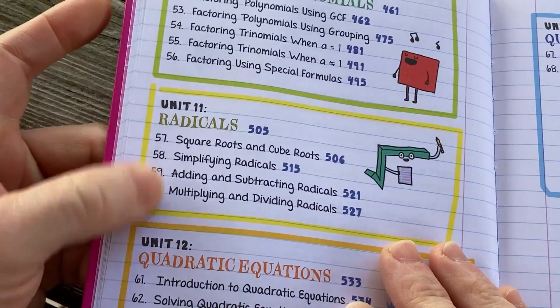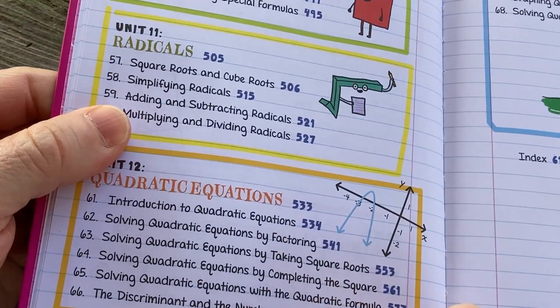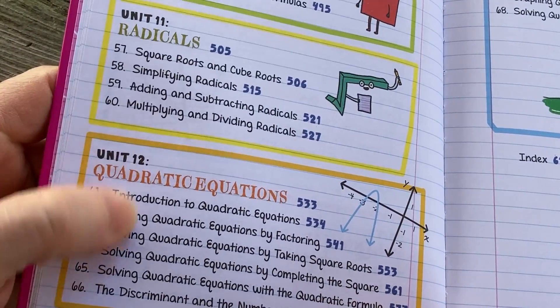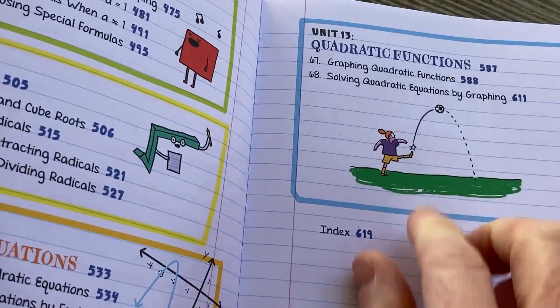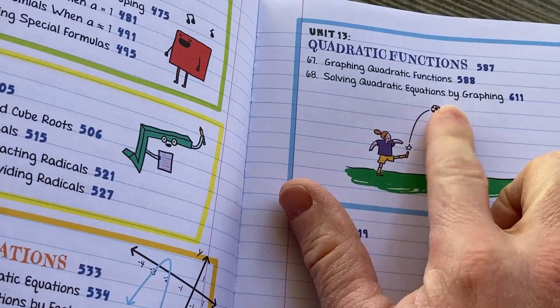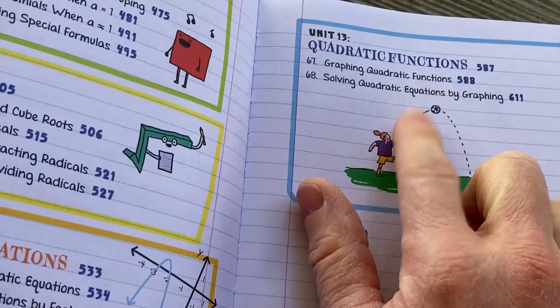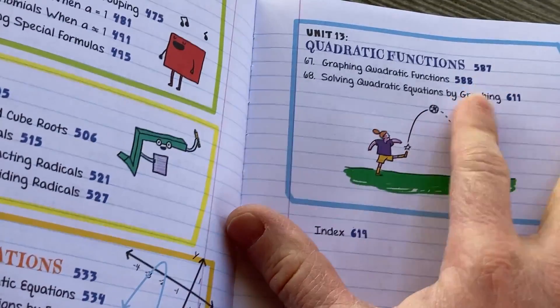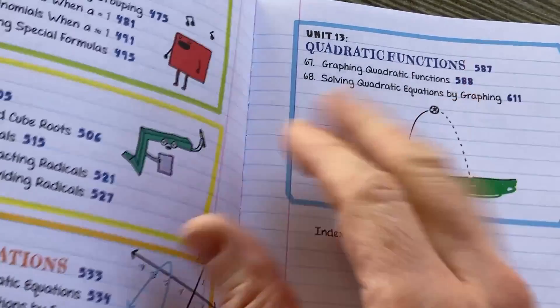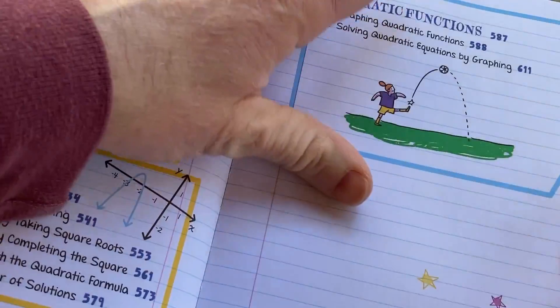And there's one more page here. Factoring polynomials, radicals, quadratic equations, a little bit more advanced than what you would typically see in pre-algebra. And then quadratic functions. Even graphing quadratic functions and solving quadratic equations by graphing. These are topics that are a little bit harder compared to the first unit of this book.